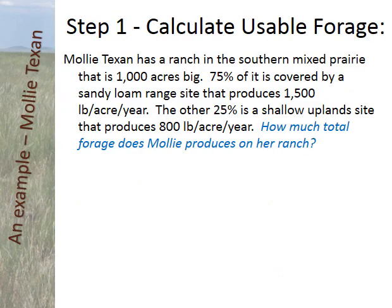I'm going to give you an example I call Molly Texan. Molly bought a ranch in the panhandle of Texas — that's in the southern mixed plains. It's a thousand acres. Seventy-five percent is covered with a sandy loam range site that produces fifteen hundred pounds per acre, and twenty-five percent is covered by an upland shallow site that produces eight hundred pounds per acre.